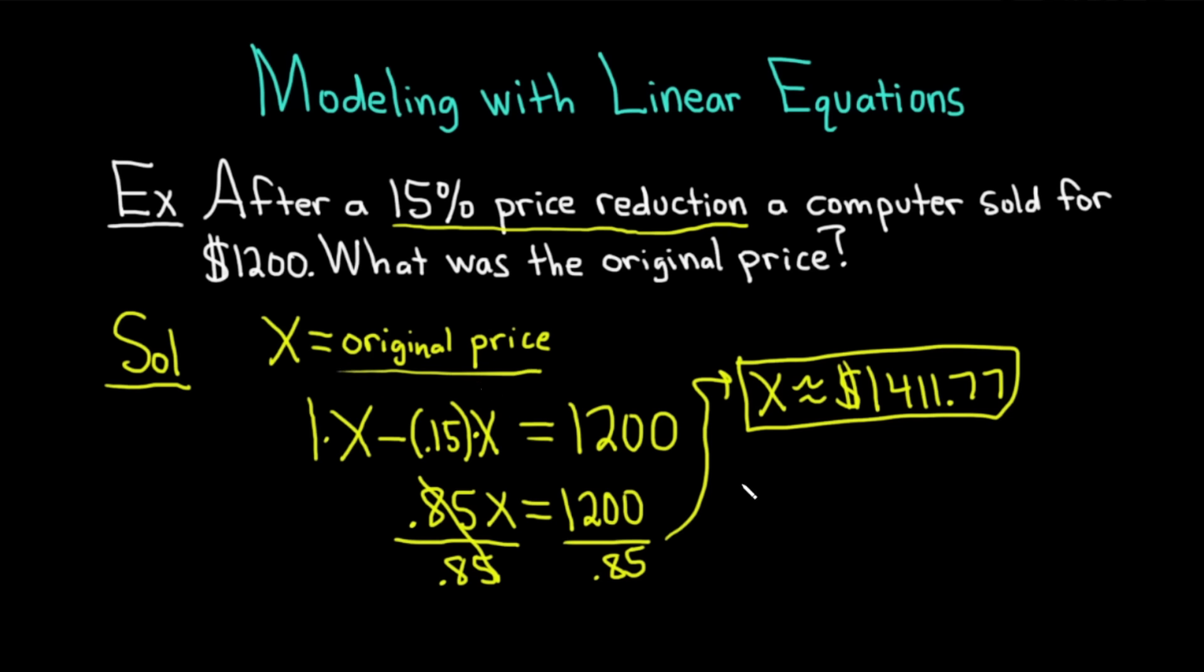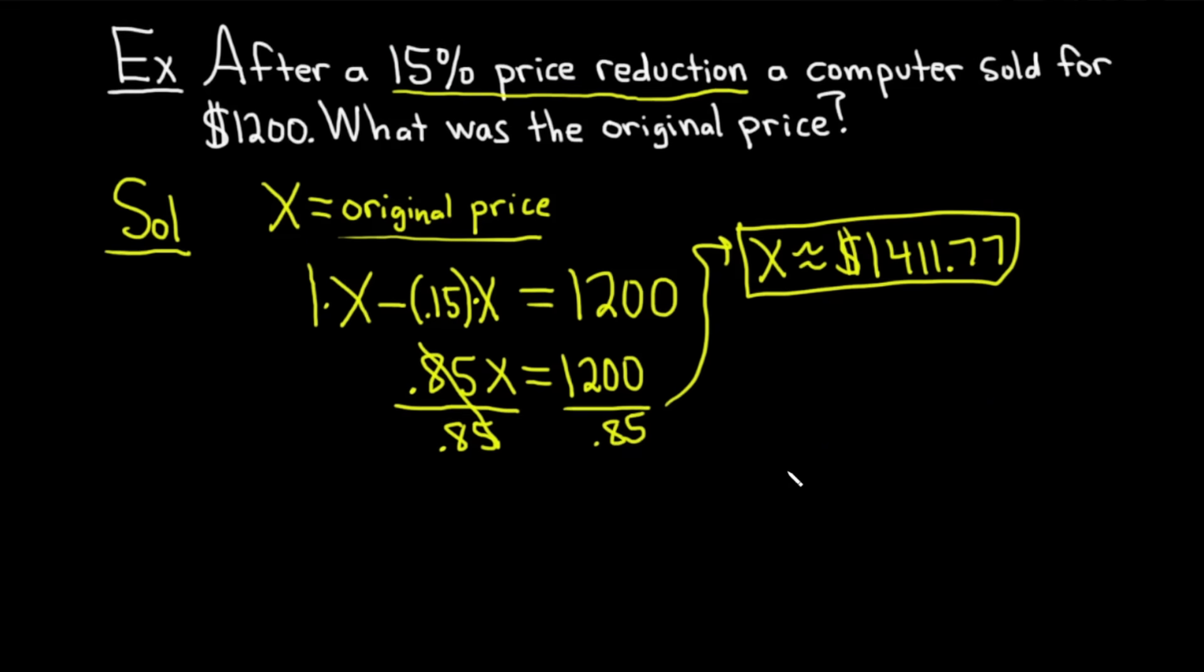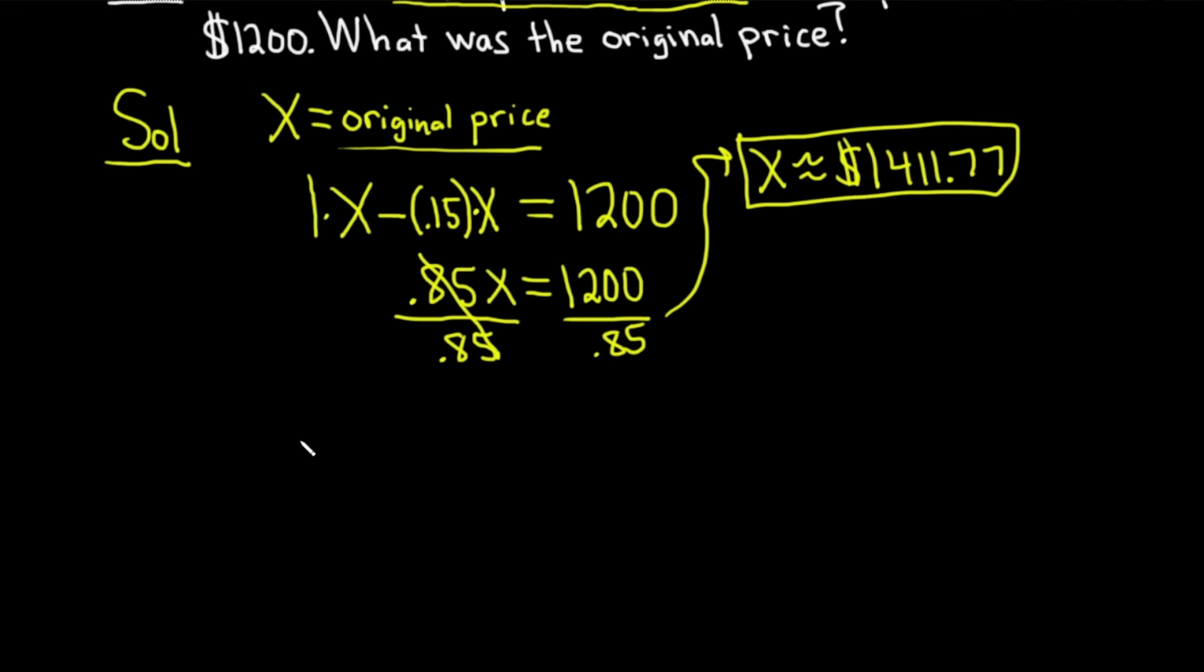I'll do it one more time down here in blue. We know it sold for $1,200, but we also know it sold at a 15% price reduction. That means it sold for the original price minus 15% of the original price. We subtracted these and got 0.85 like we did up here, and then we divided and finished up. A nice problem because it forces you to think about what a price reduction actually is.